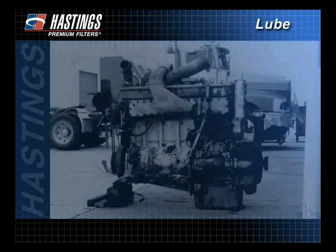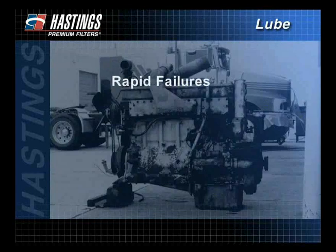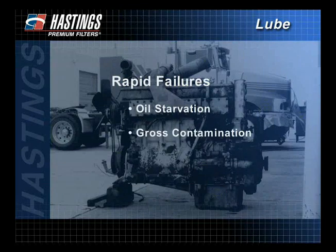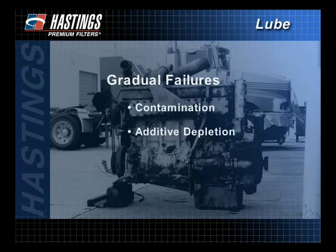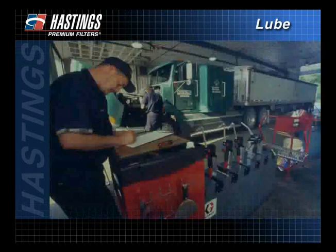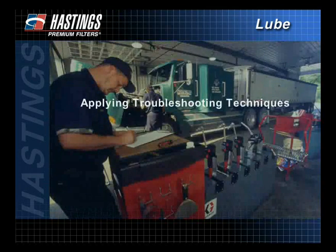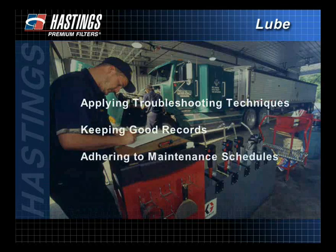Oil-related engine failures generally fall into two categories. Rapid failures are tied to obvious problems like oil starvation, gross contamination, or mechanical breakage. It's more difficult to find a cause for gradual failures — they are characterized by accelerated wear or corrosion resulting from contamination, additive depletion, oil of the wrong weight or classification, or any combination of those causes. By applying some basic troubleshooting techniques, keeping good records, and adhering to maintenance schedules, you can avoid serious breakdowns.